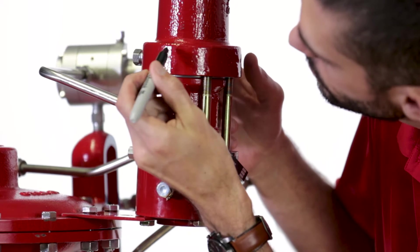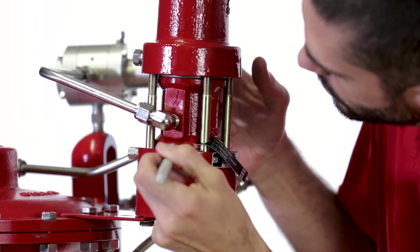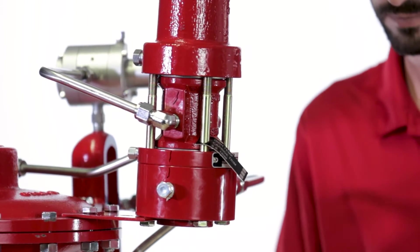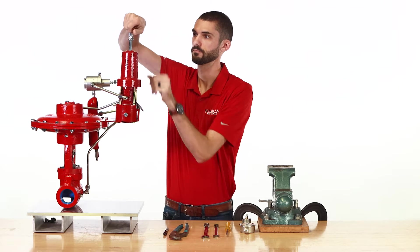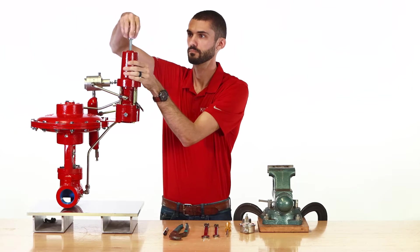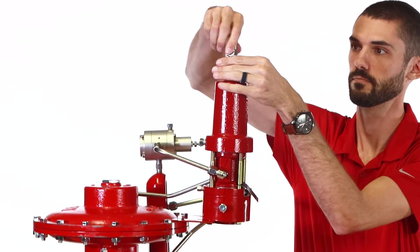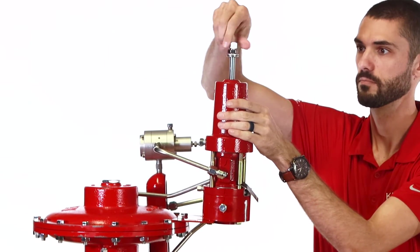To begin, make a mark on the pilot so that aligning components will be easier later during assembly. Next remove the adjustment bolt. The goal is to remove the spring tension. You can either take it all the way out or back it out to the point where you can start unthreading it by hand.